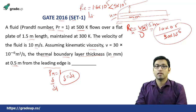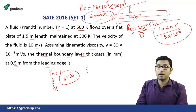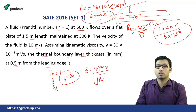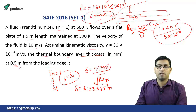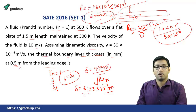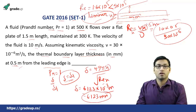After putting x = 0.5 m and the calculated Reynolds number, the hydrodynamic boundary layer thickness δ = 6.123 × 10⁻³ m = 6.123 mm. Since δ = δT when Prandtl number equals 1, the thermal boundary layer thickness equals the hydrodynamic boundary layer thickness, which is 6.123 mm.